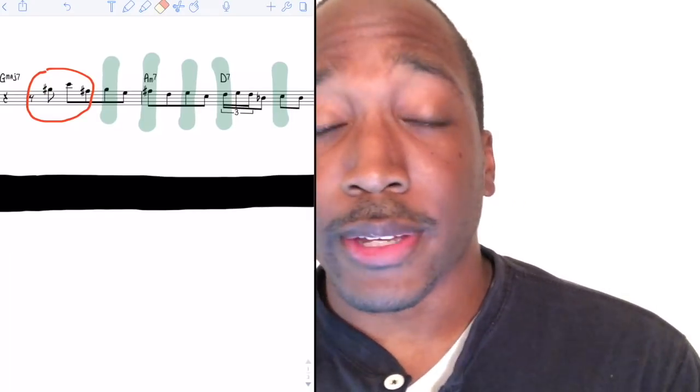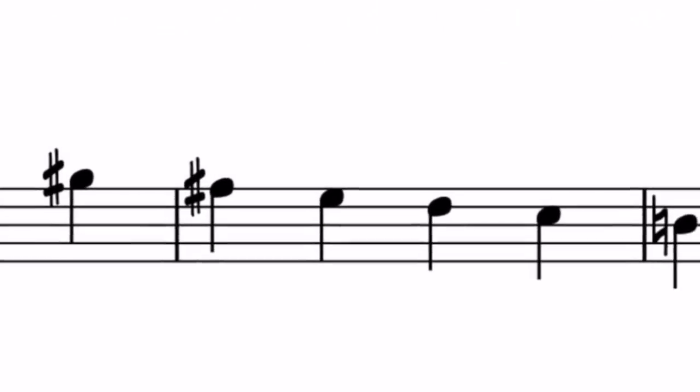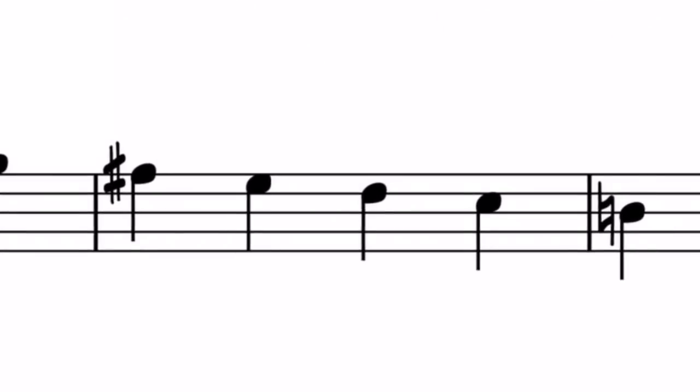So when we only include the downbeats, this is what the line will look like. And this gives us our bare bones structure of the line. Here's what it looks like and here's what it sounds like.